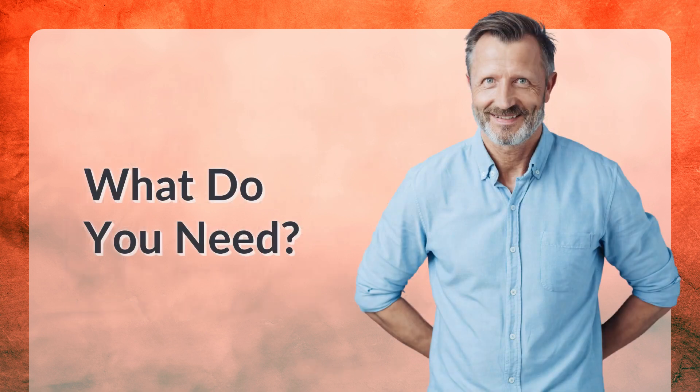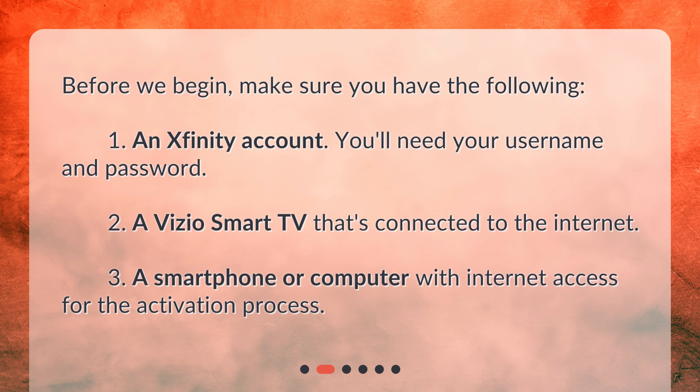What do you need? Before we begin, make sure you have the following: 1. An Xfinity account — you'll need your username and password. 2. A Vizio Smart TV that's connected to the Internet. 3. A smartphone or computer with Internet access for the activation process.